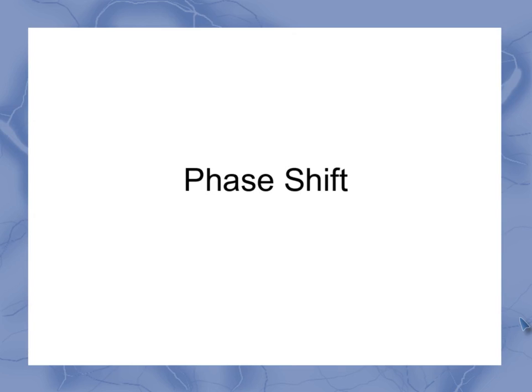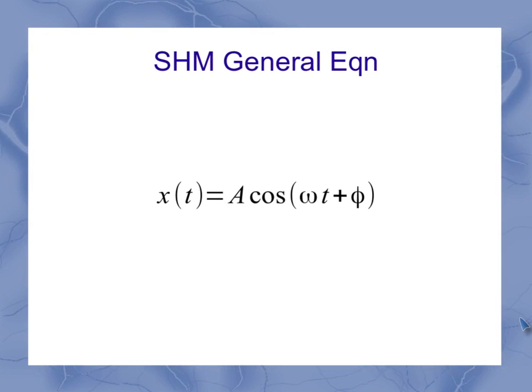Now we're ready to take a look at phase shift. As a reminder, here's our general equation for simple harmonic motion, abbreviated SHM. X, again, is the position, and it's a function of the time variable. There are three problem-specific constants in this problem: the amplitude, the angular frequency, and the phase. And phase is what we're taking a look at right now.